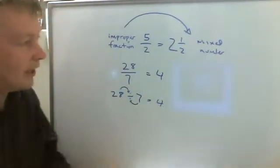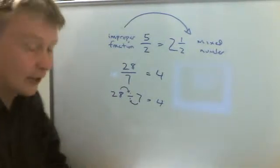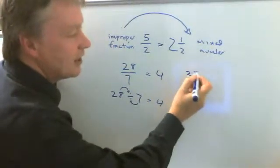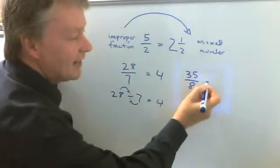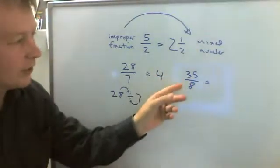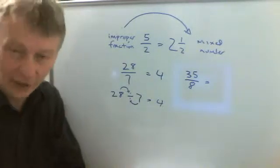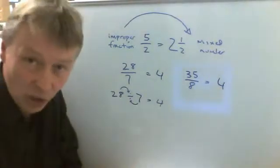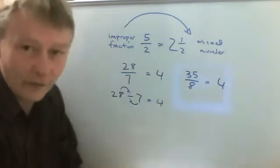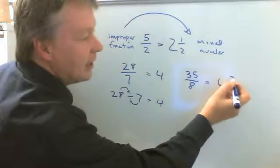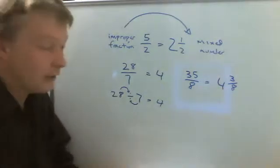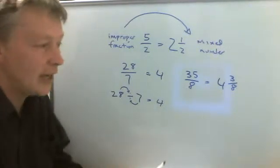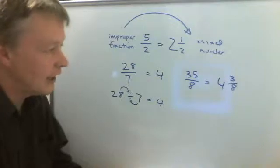Now it might be that you have a few fractions left over. So let's say you have a calculation and the calculation finishes at 35 over 8. Well, what we've got to look at is how many lots of 8 there are in 35. There are 4 lots of 8 which make 32, and because we have 35 there are 3 eighths left over. So what we've done there is gone from an improper fraction to a mixed number, and the mixed number would be the final conclusion of your calculation.